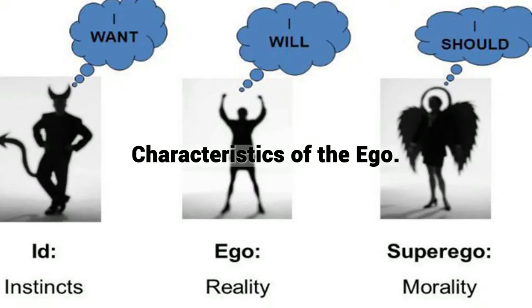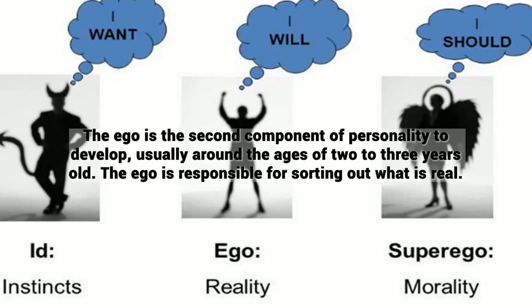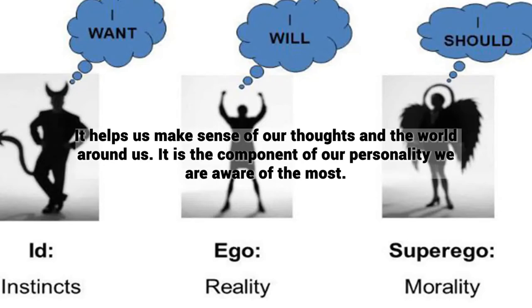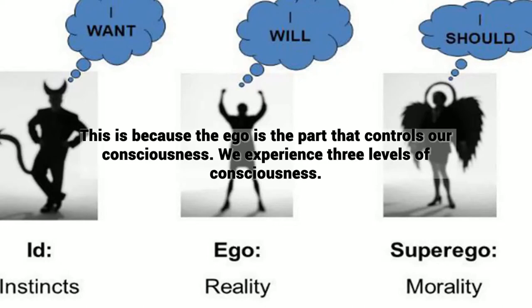Characteristics of the Ego. The ego is the second component of personality to develop, usually around the ages of two to three years old. The ego is responsible for sorting out what is real. It helps us make sense of our thoughts and the world around us. It is the component of our personality we are aware of the most, because the ego is the part that controls our consciousness.